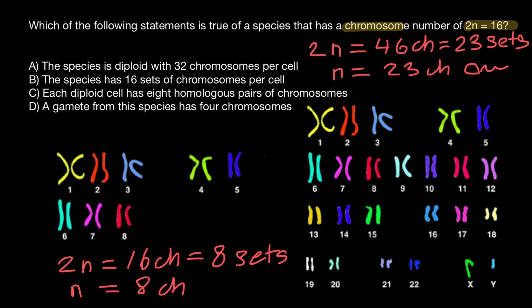16 chromosomes means if it is a diploid organism, eight pairs of chromosomes. Variant B, species has 16 sets of chromosomes per cell. 16 sets of chromosomes also would give us 32 chromosomes. So this is also a wrong statement.